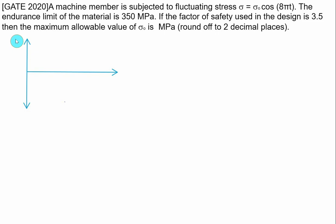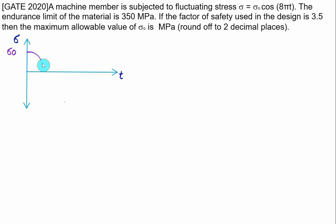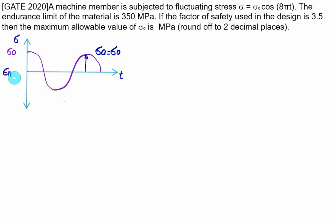The cosine function represents a purely alternating stress. Drawing a graph of stress versus time, putting T equal to 0 gives cos equal to 1, so stress equals sigma₀. At T equal to 1/2, the argument becomes 4π, giving a cosine curve. Therefore the amplitude stress is equal to sigma₀ and the mean stress is equal to zero.